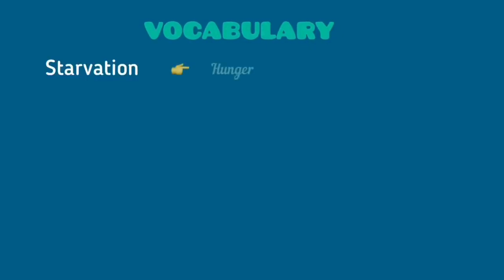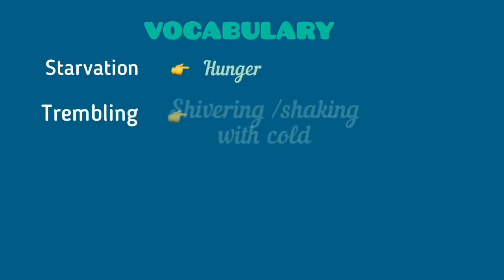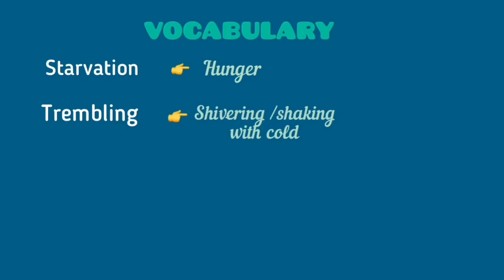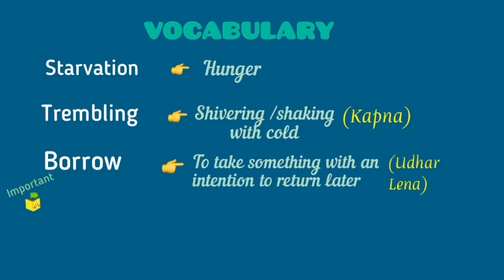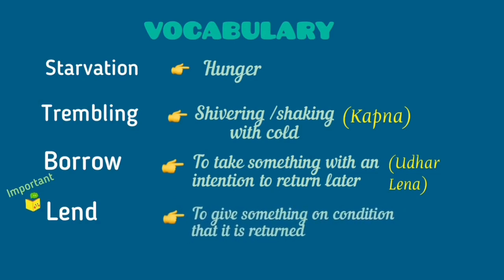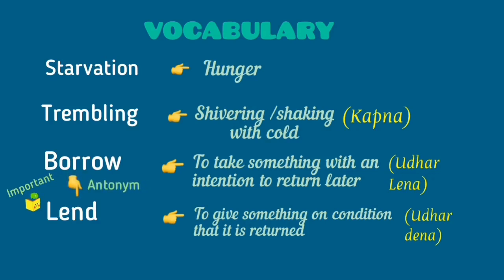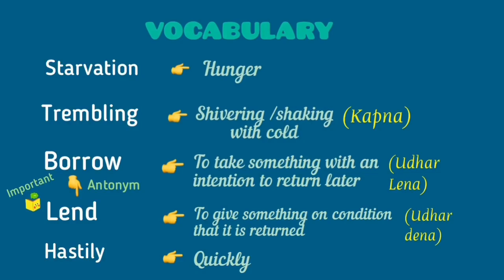Here are some difficult words explained. Starvation means hunger — bhook. Trembling means shivering or shaking with cold — thand ki wajah se kaapna. Borrow means to take something with an intention to return later — udhaar lena. Lend means to give something on condition that it is returned — udhaar dena. Borrow is the antonym of lend and vice versa. Hastily means quickly — jaldi se. If you want, you can take a screenshot of these word meanings and learn them later.